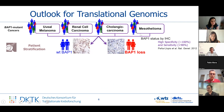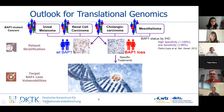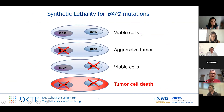With that stratification of patients, we can then try to identify vulnerabilities for the loss of BAP1. For that, we use the synthetic lethality approach, where if there is a BAP1 loss, we can inactivate a specific gene, but it will only be deleterious in the context of BAP1 loss.